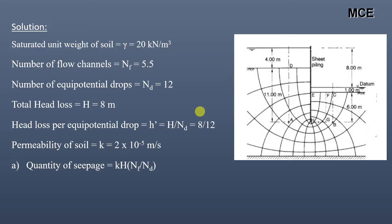The permeability of soil is given as 2×10⁻⁵ meter per second. The quantity of seepage is given as k × H × Nf / Nd. Putting in values, we get the quantity of seepage equal to 7.33×10⁻⁵ meter cube per second per meter.